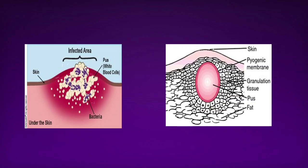Diagrammatically, the abscess is shown under the skin as a pus-filled cavity lined by a pyogenic membrane, with granulation tissue surrounding it.